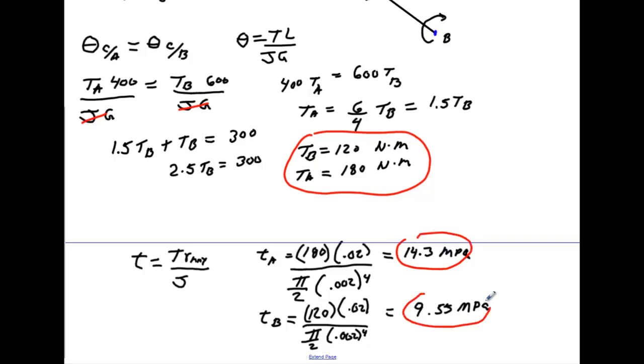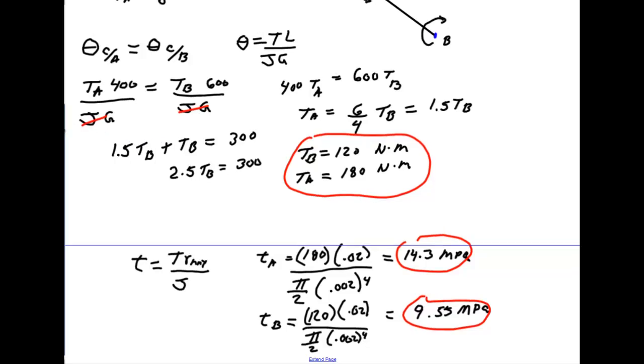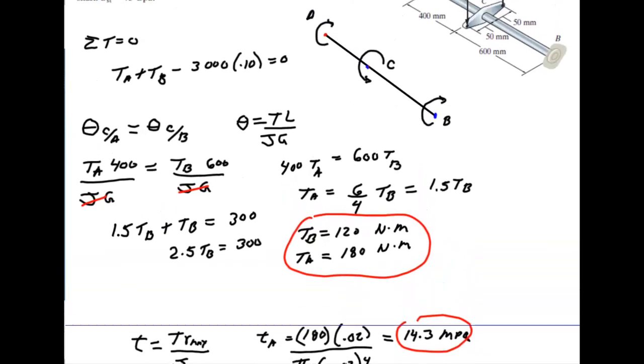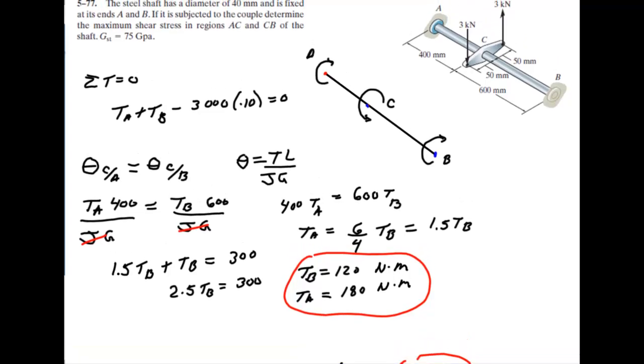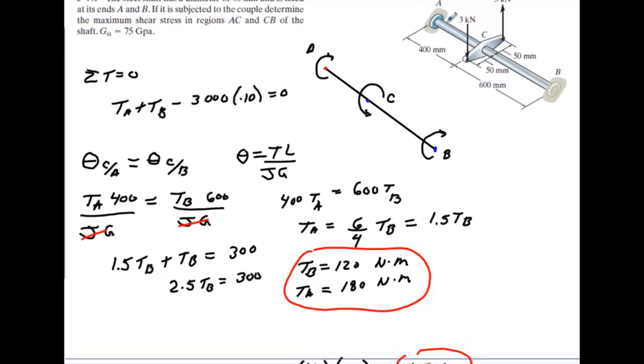And that is it. So fairly straightforward problem. The only challenging thing, it's really not that challenging, is realizing that the angular twists between here and here and between here and here have to be the same. That's going to allow you to find the torques at A and torques at B. Best of luck.